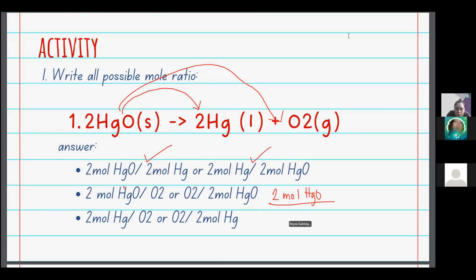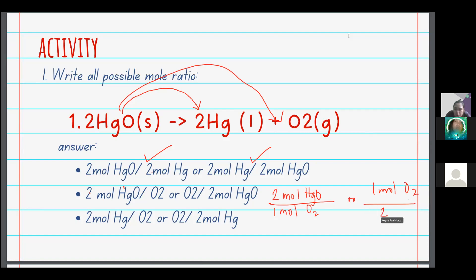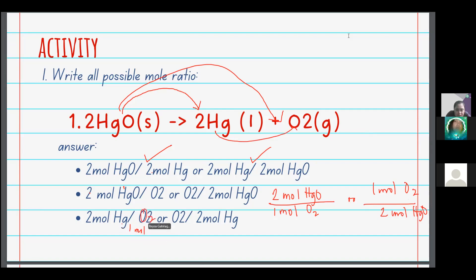It should be 1 mole of oxygen only. And the reciprocal: 1 mole of oxygen is to 2 moles of mercury oxide. You can also pair product with product, so please write 1 mole of mercury and 1 mole of oxygen. That gives us 1 mole of oxygen is to 2 moles of mercury.